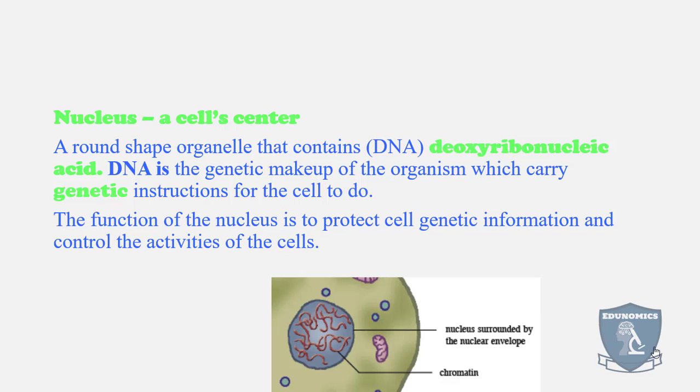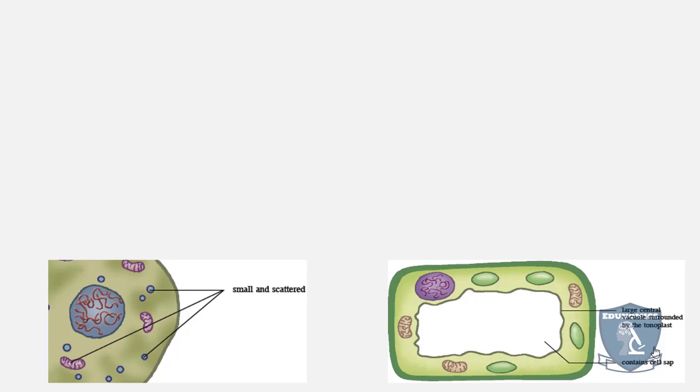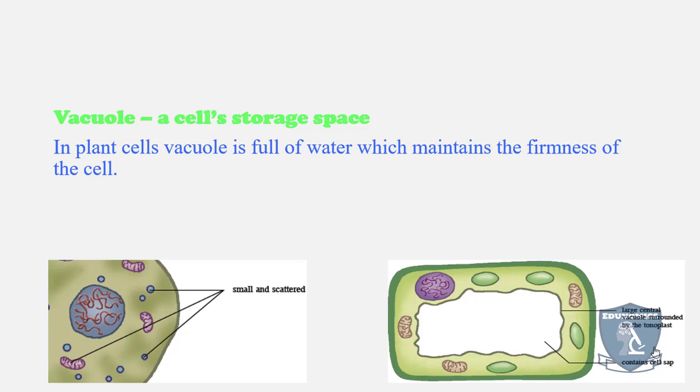Vacuoles are the storage spaces within the cell. In plant cells, vacuoles are normally full of water which maintains the firmness of the cell. If you've ever noticed that when the sun gets extremely hot, plants look droopy, as if they're dried out...